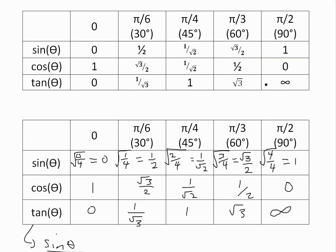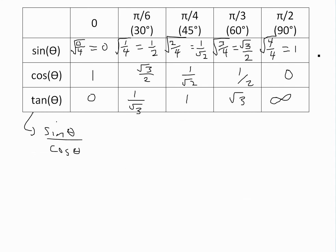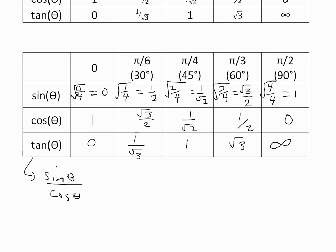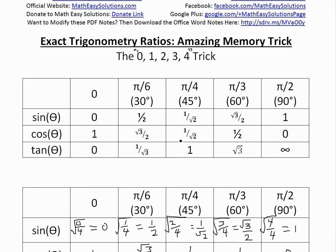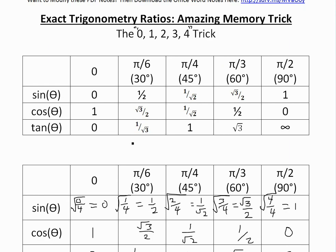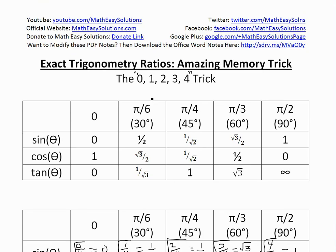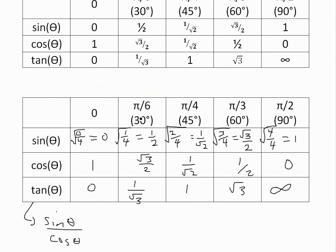So as you see, this is the exact same table. It's a pretty amazing trick, so you just go zero, one, two, three, four, divide by four, square root, and then you're just going to flip it for cosine and divide it out and you're going to get tangent. Anyways that's all for today, hopefully you learned from this. You can download these notes in the link below, and thanks for watching, and stay tuned for another Math Easy Solution.